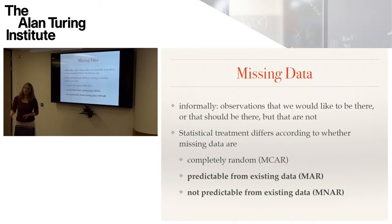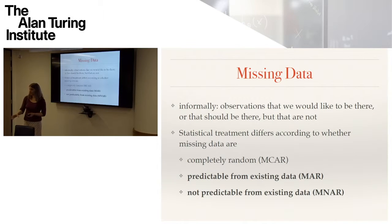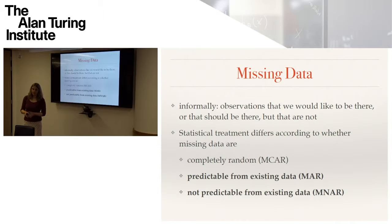So, missing data. Very informally, missing data is about observations that we would like to be there, or that should be there, but are not. In the health context, it's people who haven't input their readings, people who have left their activity trackers at home, people who haven't shown up to appointments. The statistical treatment has mostly been focused on finding a way to get those missing values from the values that are there — imputing the values. Researchers have identified three different types: values that are missing completely at random, which are relatively easy because we can leave them out or impute them easily.